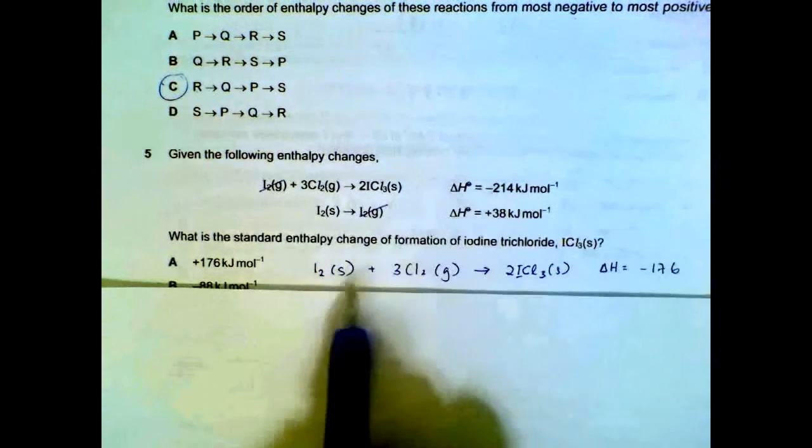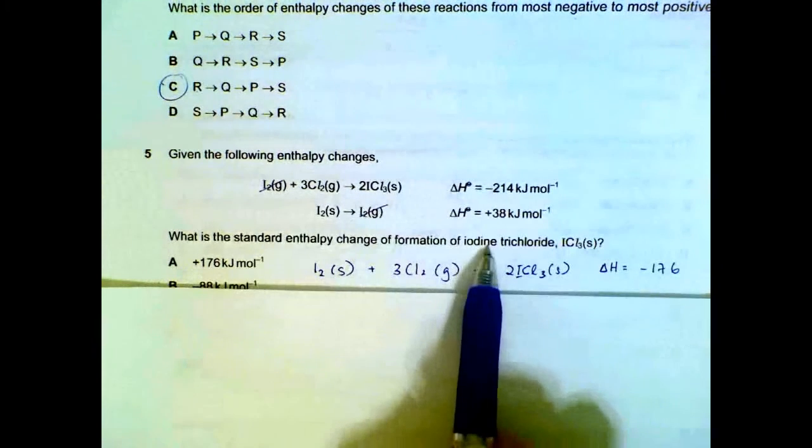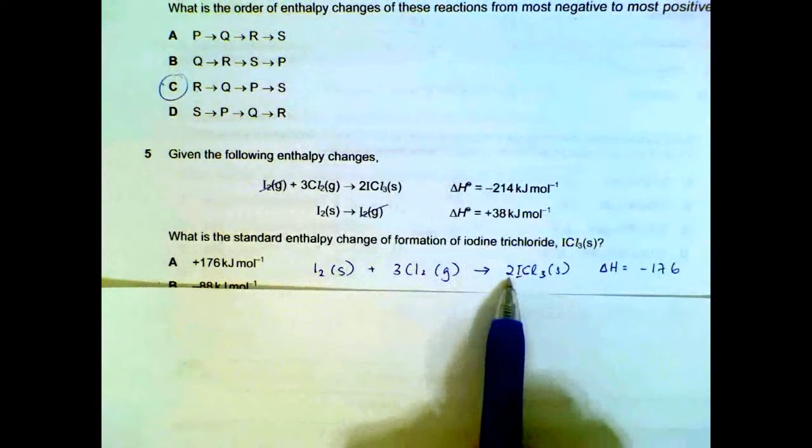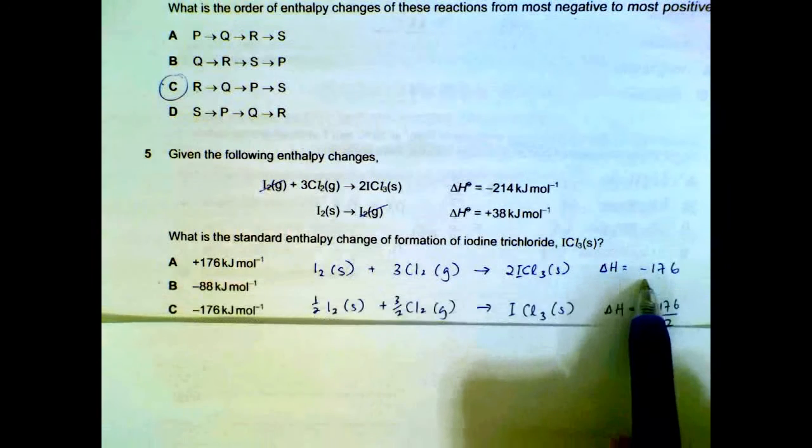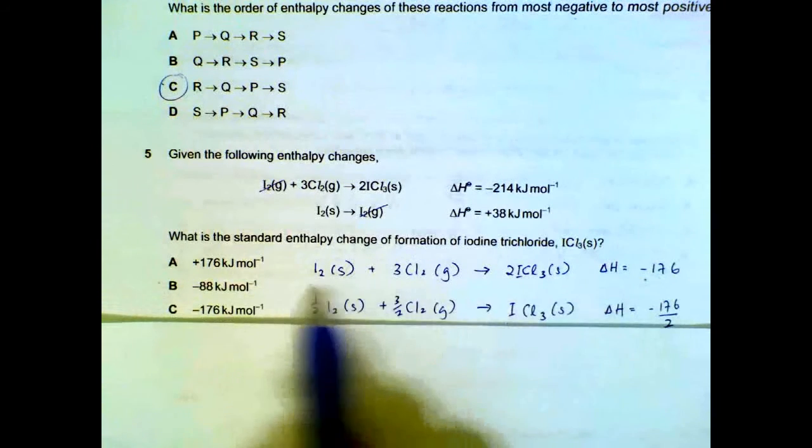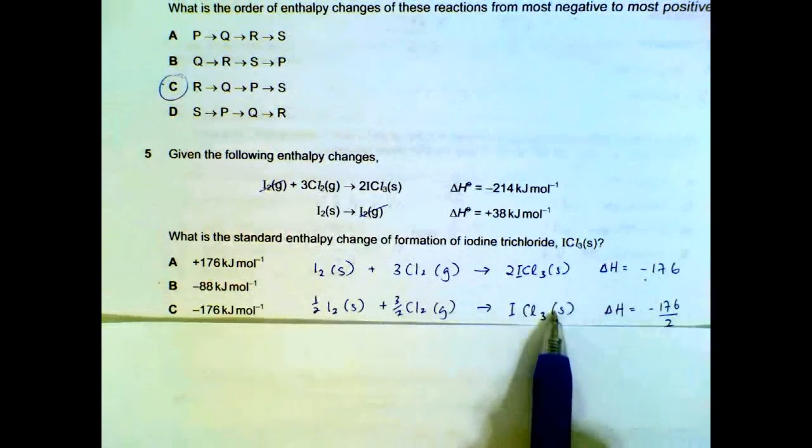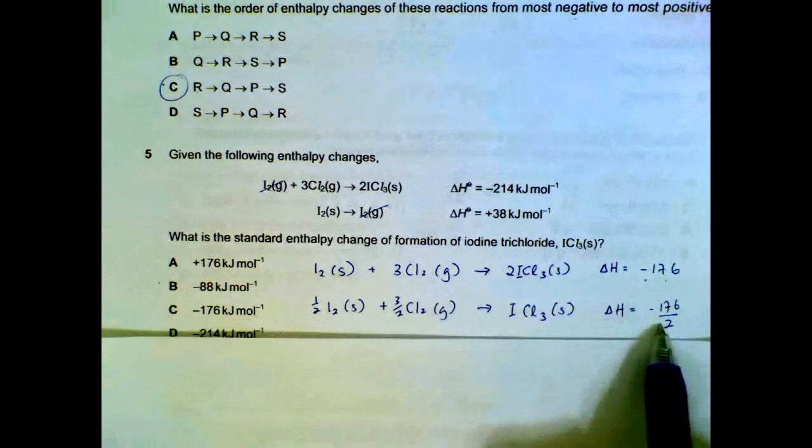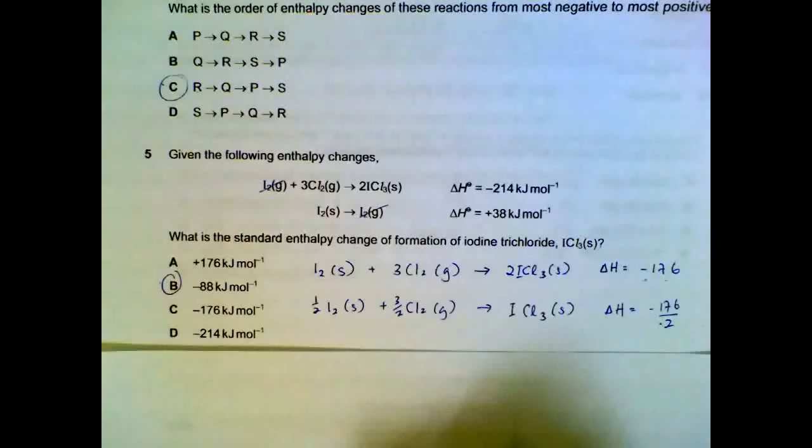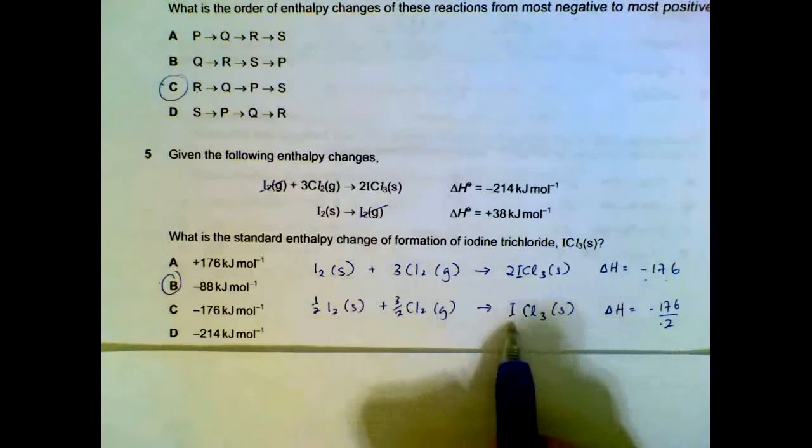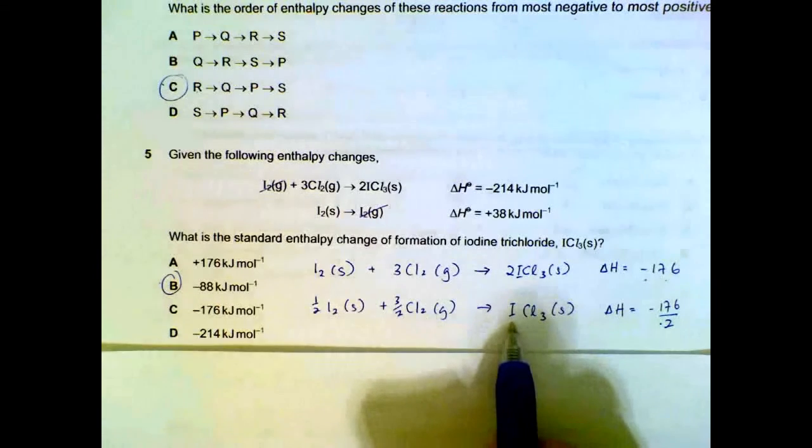But this is not the formation of iodine trichloride, because we need to have one mole of ICl3. So, from here, 176, we change it to one mole, we have to divide throughout by 2. So, 176 divide by 2 will give us minus 88. This is the heat of formation of one mole of iodine trichloride.